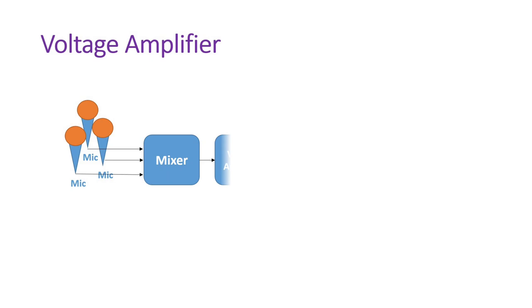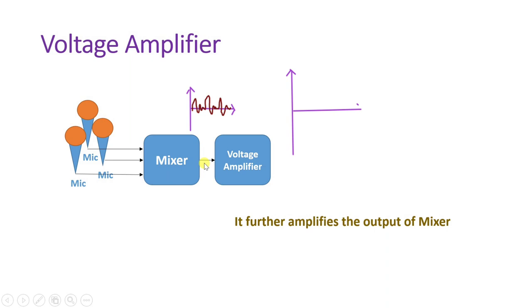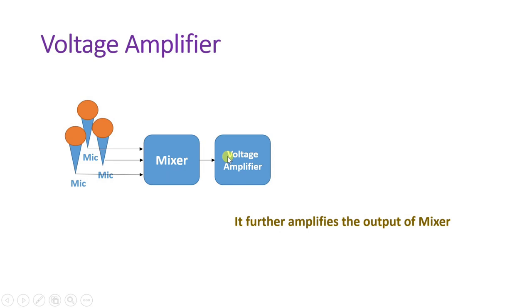After the mixer, the voltage amplifier is connected. Whatever output comes from the mixer is fed to the voltage amplifier, which amplifies the output of the mixer so that there is a higher voltage at the output of the voltage amplifier compared to the mixer output.